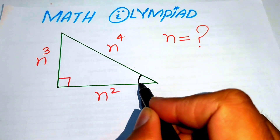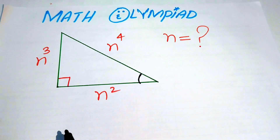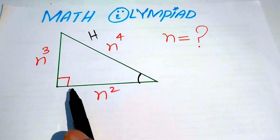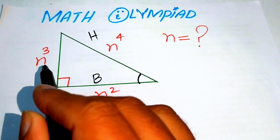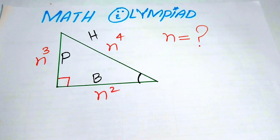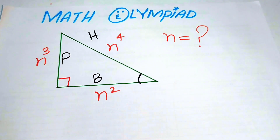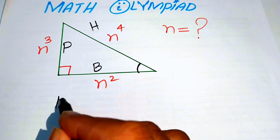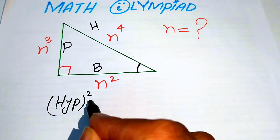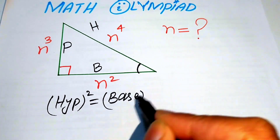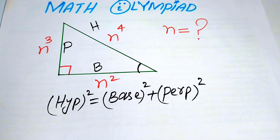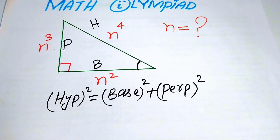Suppose this is the second angle of this right triangle. The longest side of the right triangle is called the hypotenuse, the side which joins these two angles is called its base, and the third side is called the perpendicular. We already know that in a right triangle the Pythagorean theorem holds.